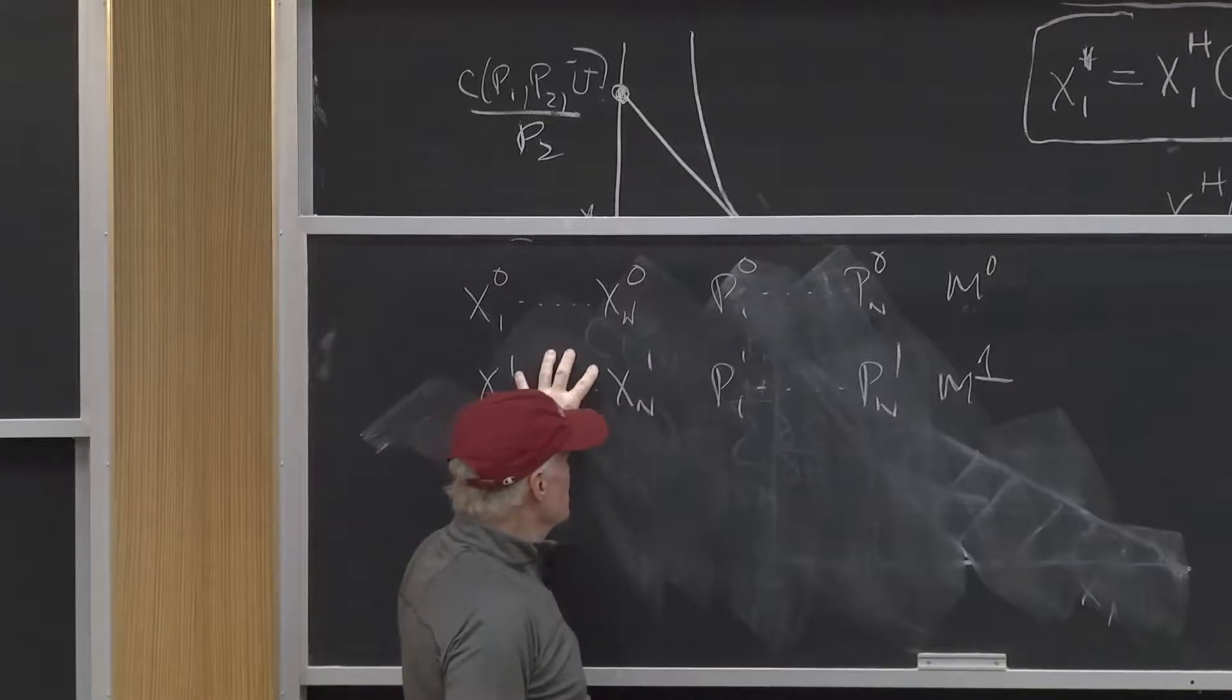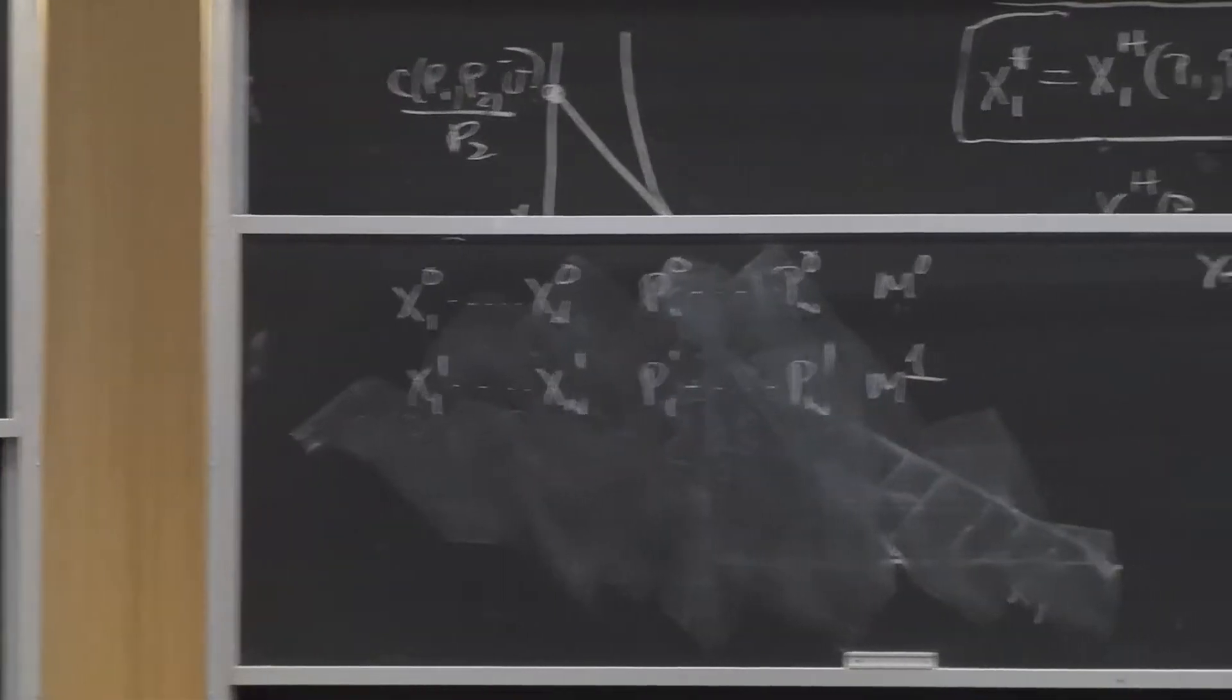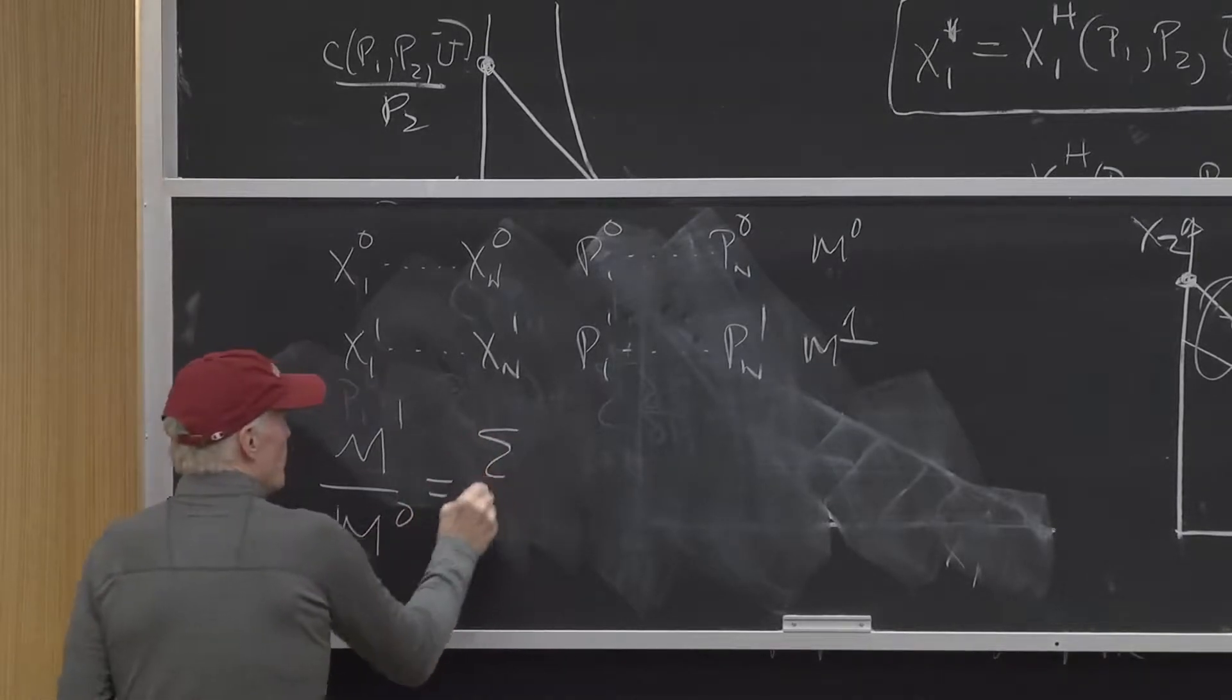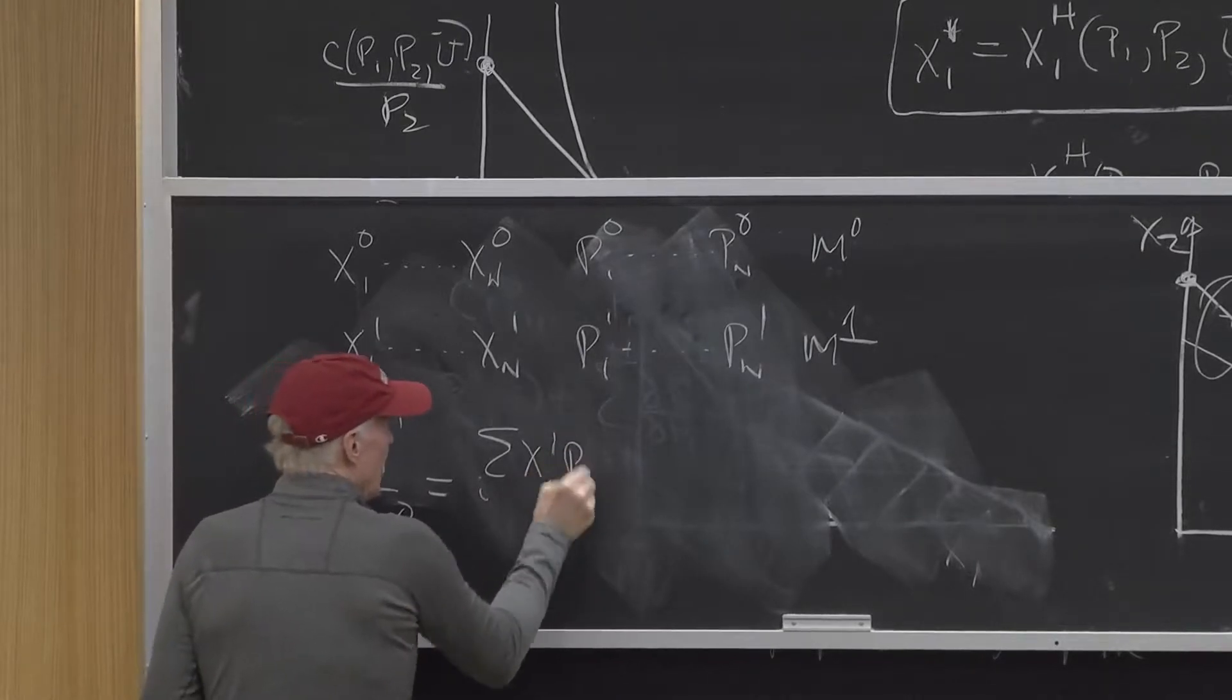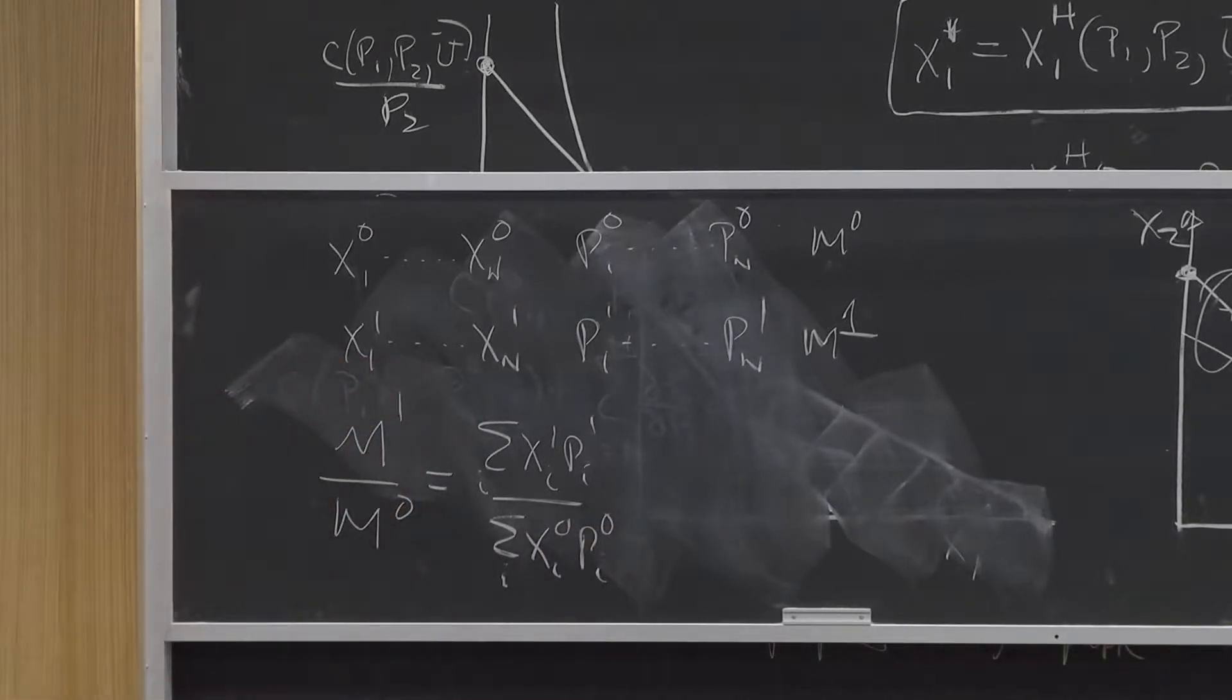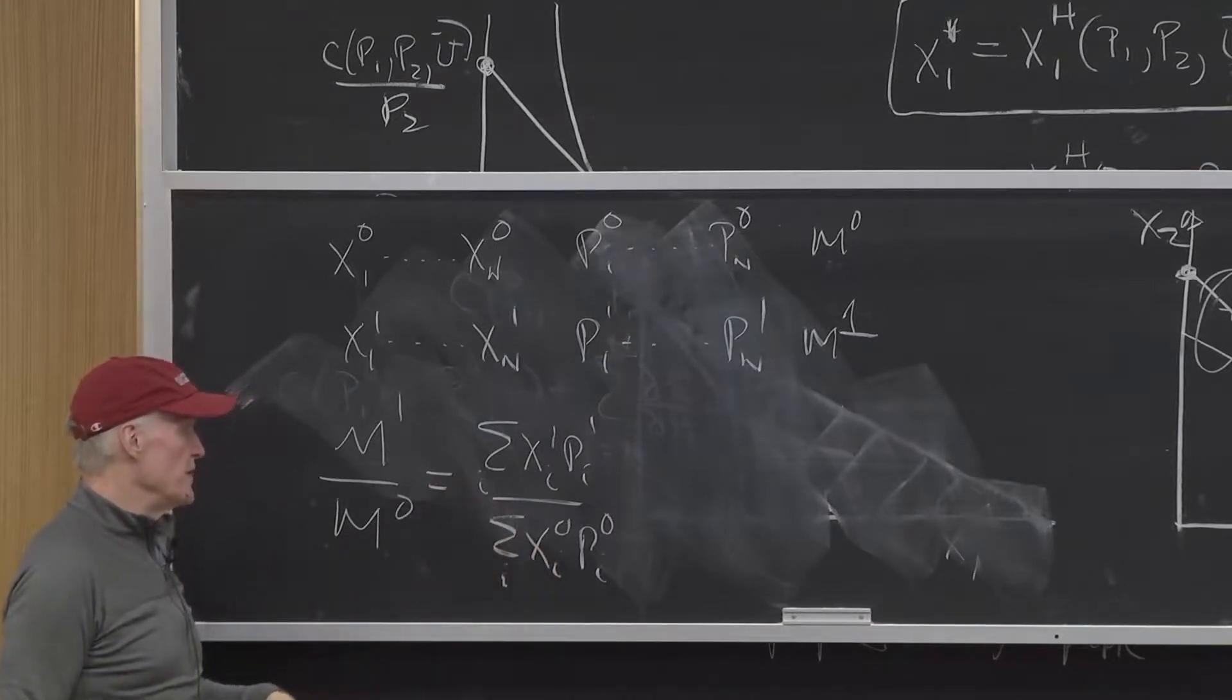Period one, we consume this mix of goods at these prices in this income level. And I want to look at the change over time, and I can write m1 over m naught equals the sum over i of xi1, p1, over sum over i xi naught, p1. That's by definition. This income is the sum of all the expenditures. This income is the sum of all those expenditures, so the ratio has got to be that.